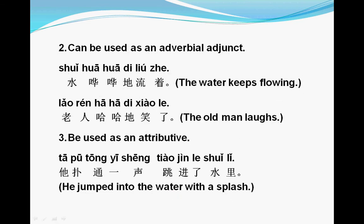The second thing we need to know is that xiāng shēng cí can be used as an adverbial adjunct. For example, shuǐ huā huā de liú zhe — water flowing with a huā huā sound. Huā huā de is used as the adverbial adjunct; liú means flowing; shuǐ means water. Another example: lǎo rén hā hā de xiào le — lǎo means old, rén means person, hā hā de means laughed with a hā hā sound.